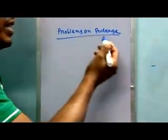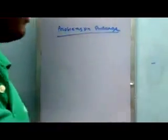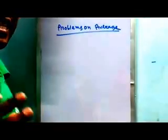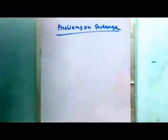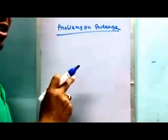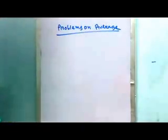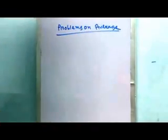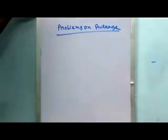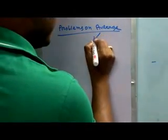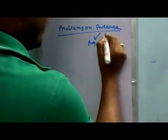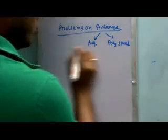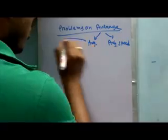Friends, today I will discuss problems on average and its shortcut tricks. I will show some tricks which will be required to solve questions coming from this chapter during your exam in very short time. Average is of two types: normal average and average speed.